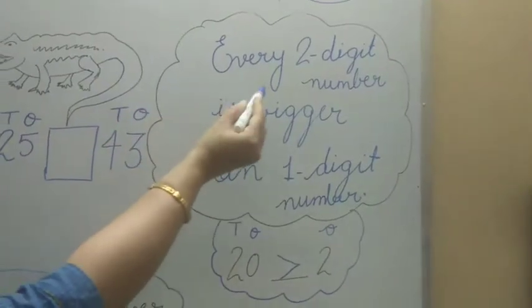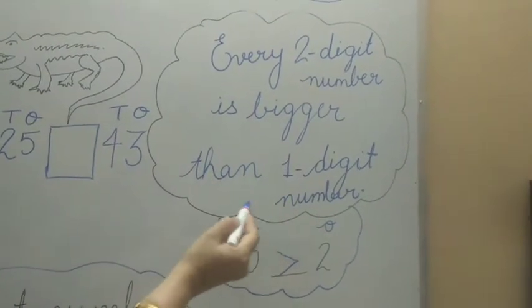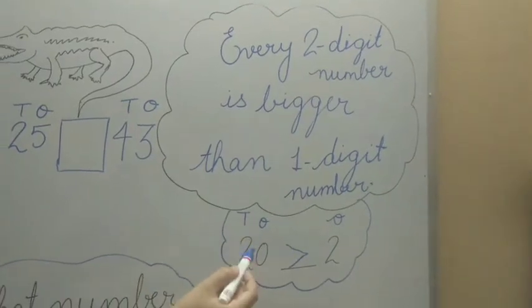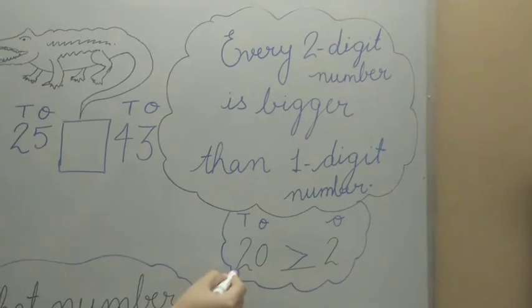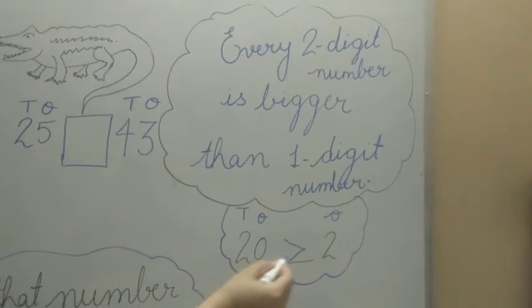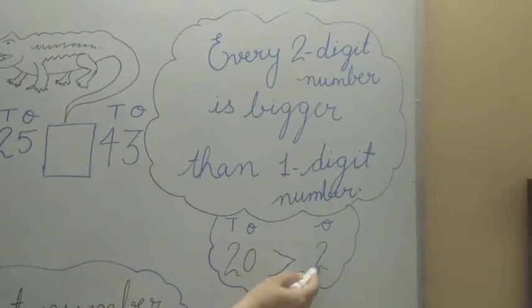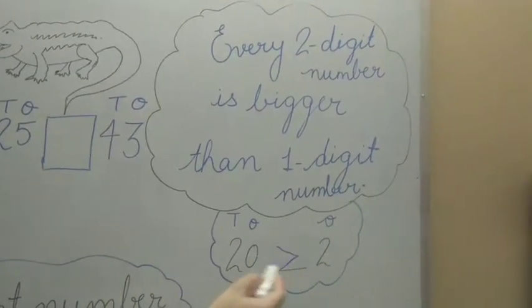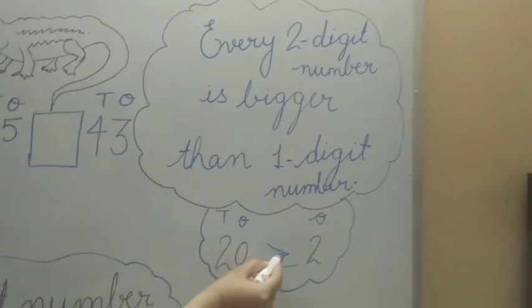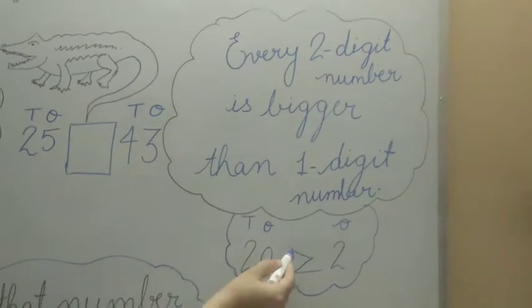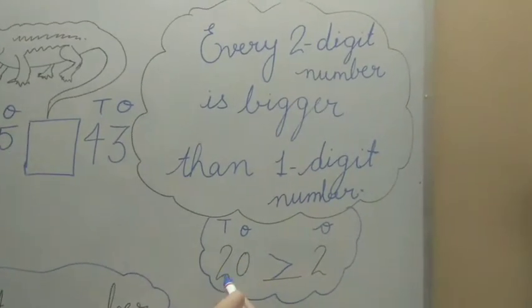You know that every two-digit number is bigger than a one-digit number — you have done this in the last exercise also. For example, we have the two-digit number 20 on one side, and the number 2 on the other side, which is only a single digit. So the two-digit number is always bigger than the one-digit number. We open the crocodile mouth facing 20.